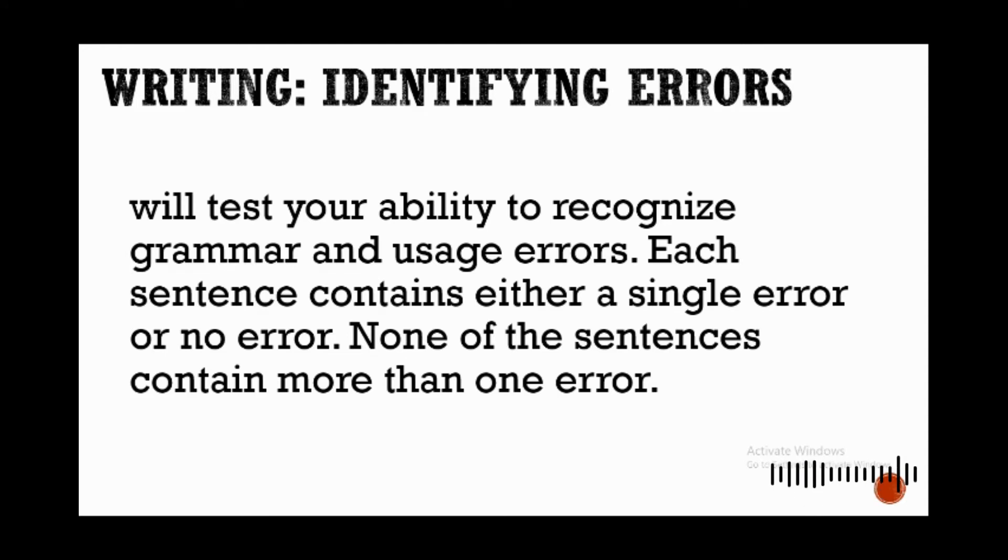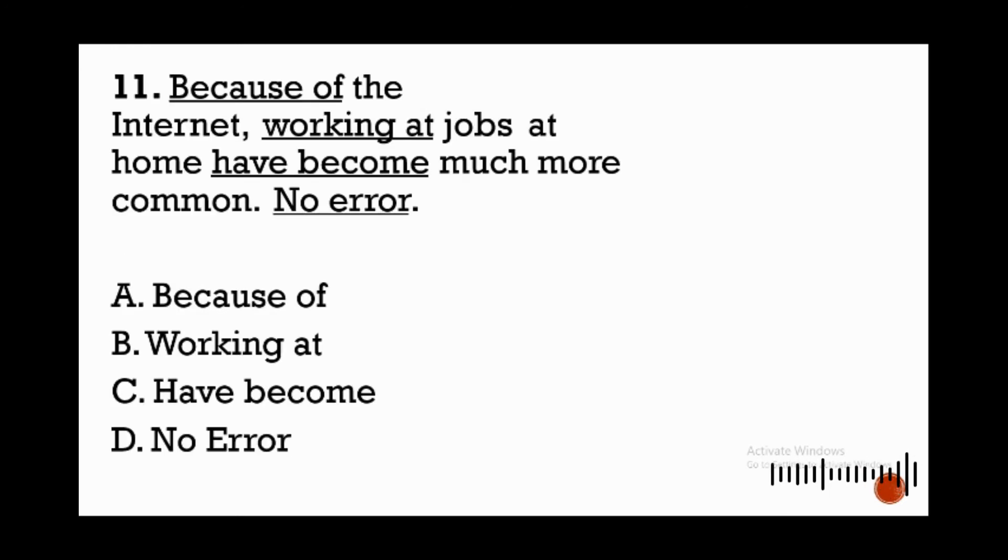The sentence is presented and some parts of the sentence, some words or phrases, are labeled with alphabets or numbers and underlined, and you're going to identify which underlined words or phrase makes the sentence incorrect. Let's go back to your pretest and let's try to answer all the items under identifying errors type of test.